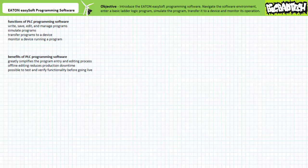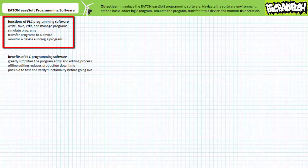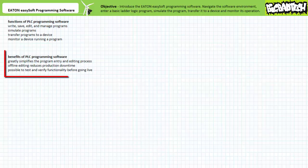Ultimately, well-designed PLC programming software will allow a user to do four things: write, save, edit, and manage programs; simulate programs; transfer programs to a device; and monitor a device running a program. Not only does the use of programming software like EZSoft greatly simplify the program entry and editing process, the ability to work on a program offline without stopping the PLC reduces production downtime. Additionally, simulation makes it possible to test and verify functionality before going live with real-world hardware in a production environment.